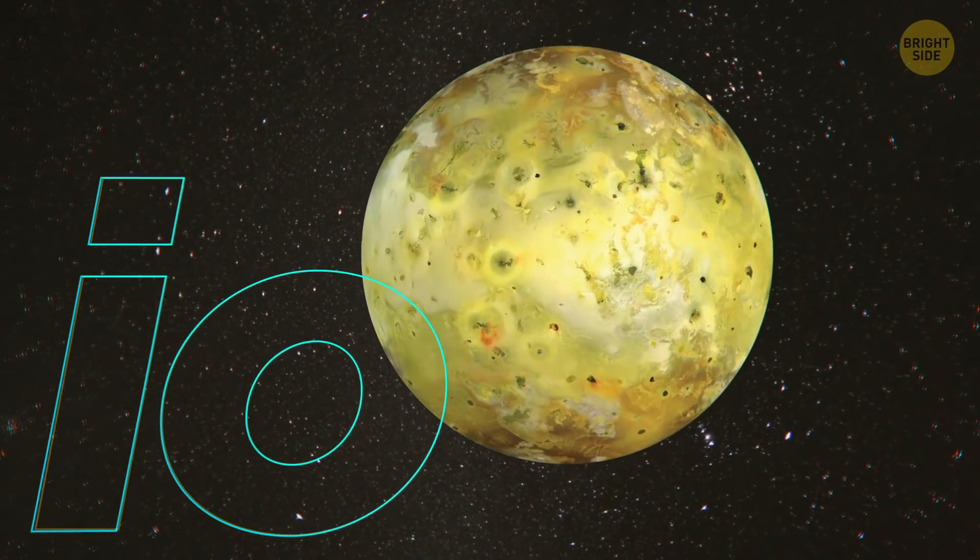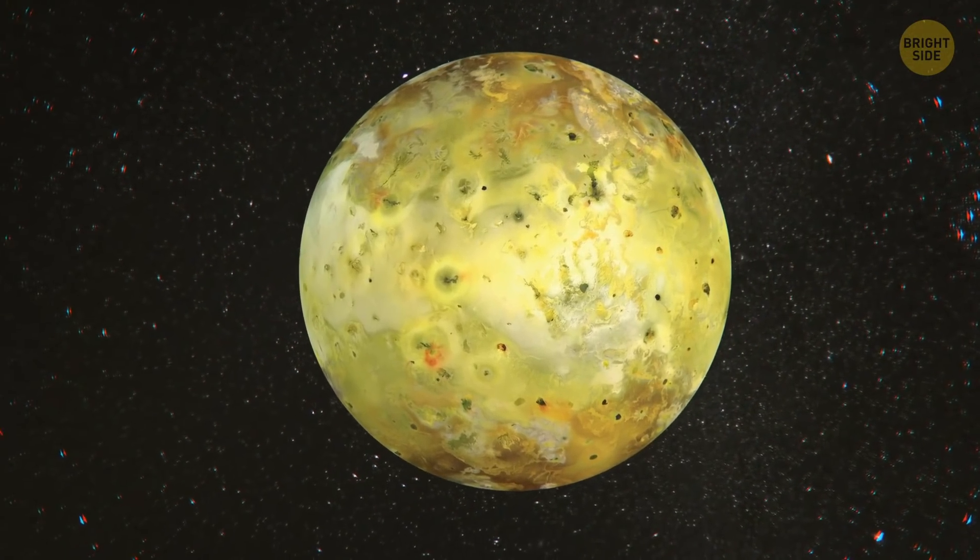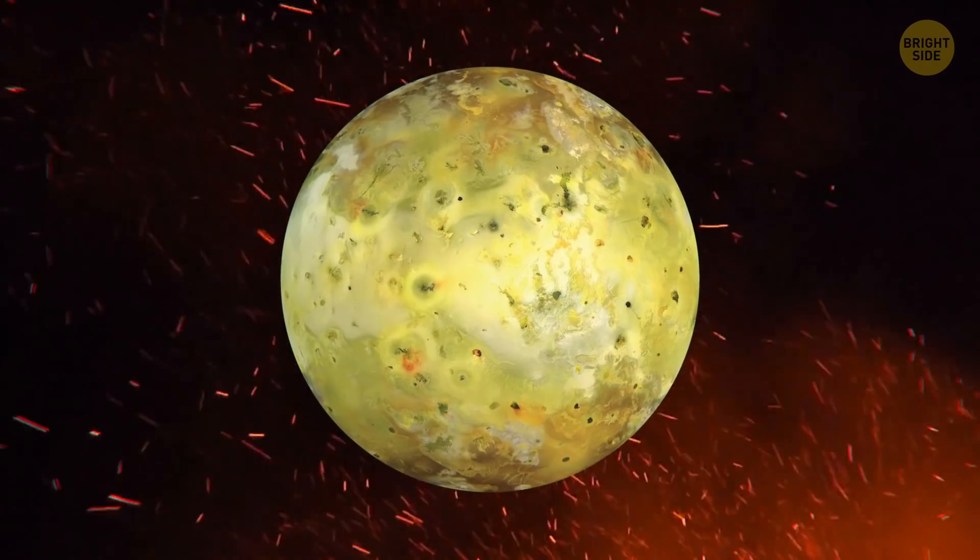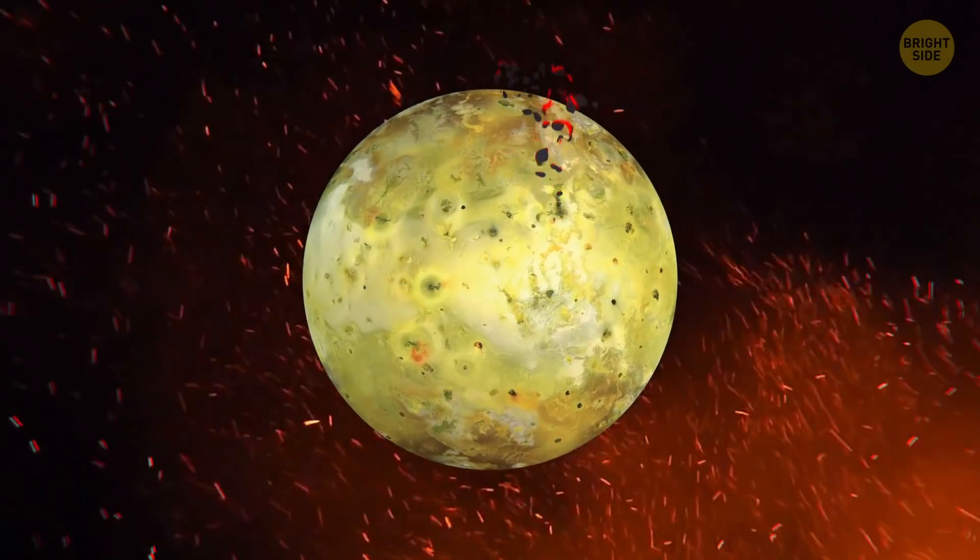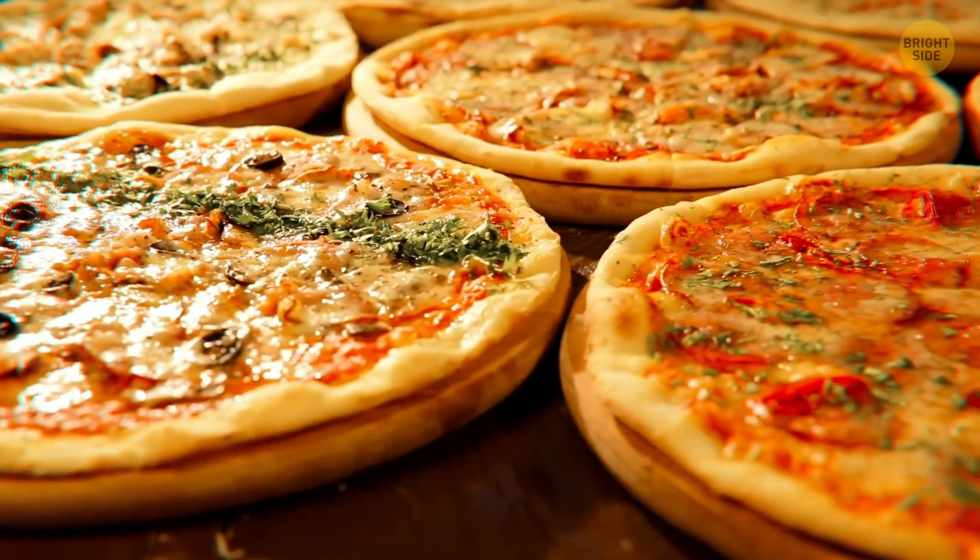Jupiter's Moon, Io, looks kind of like a cheese pizza, don't you think? Maybe a moldy one? Its surface probably resembles a giant stove with burners everywhere. Those are all active volcanoes. All this food talk makes me wonder.